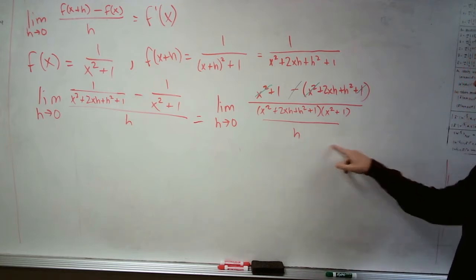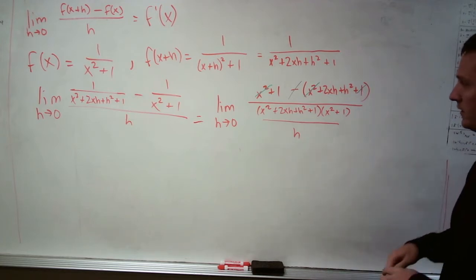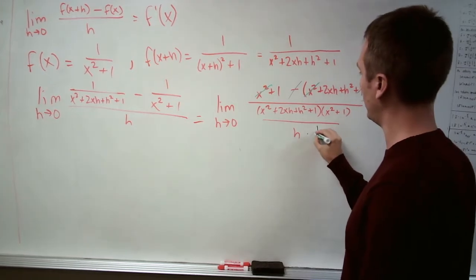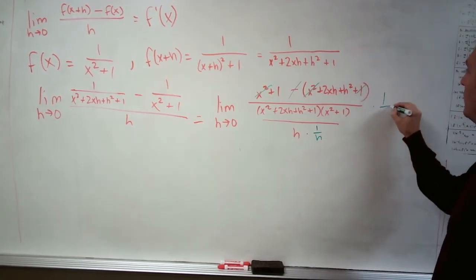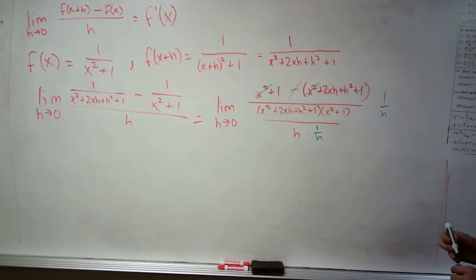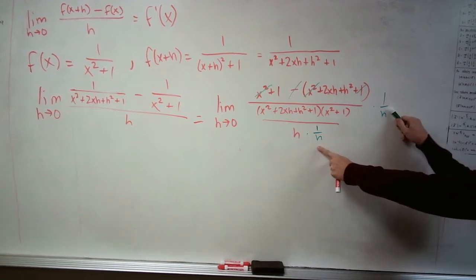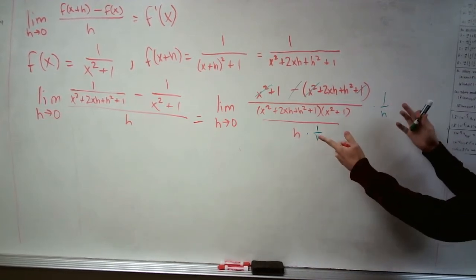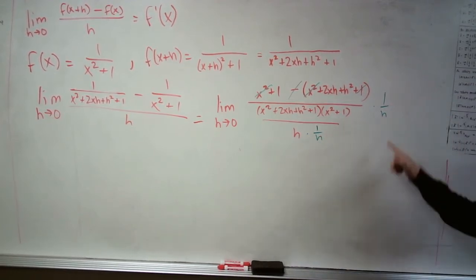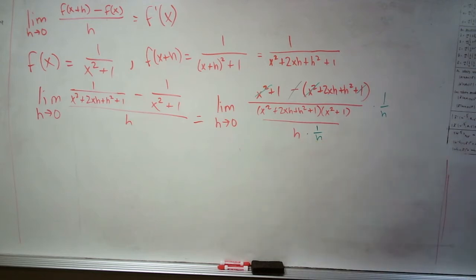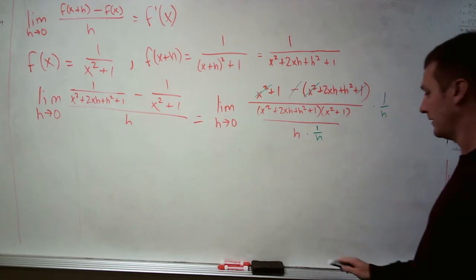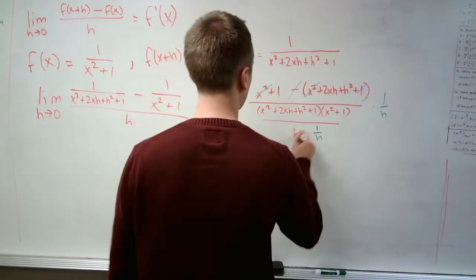I'm also going to bring the h up here by multiplying on top and bottom by this 1 over h term. That's just 1 over h divided by 1 over h, which is 1, multiplication by 1 does nothing. But this is going to simplify this compound fraction into a single fraction.